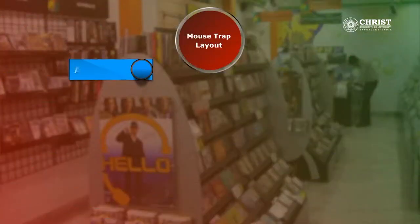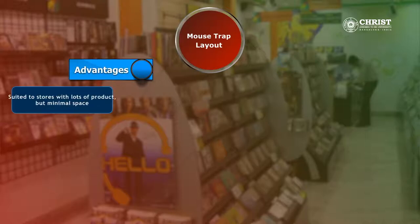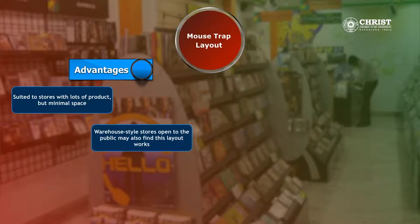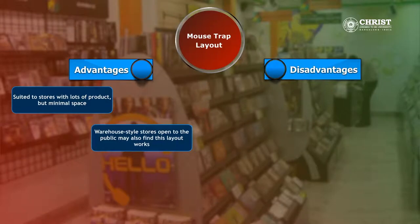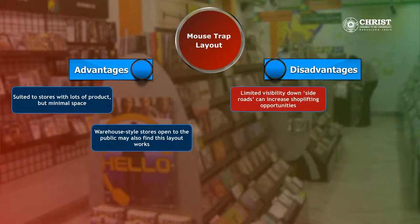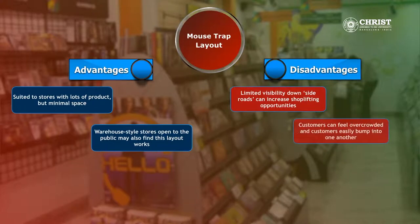Now let us discuss about the advantages and disadvantages of a mouse trap layout. The advantages are it is suited to stores with lots of product but minimal space, and warehouse style stores open to the public may also find this layout works. The disadvantages are limited visibility and blind spots can increase shoplifting opportunities, customers can feel overcrowded and easily bump into one another.